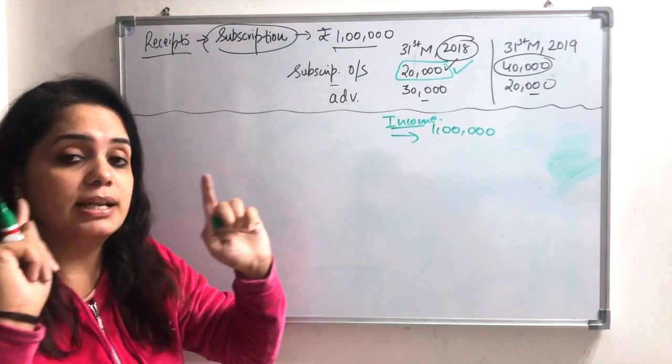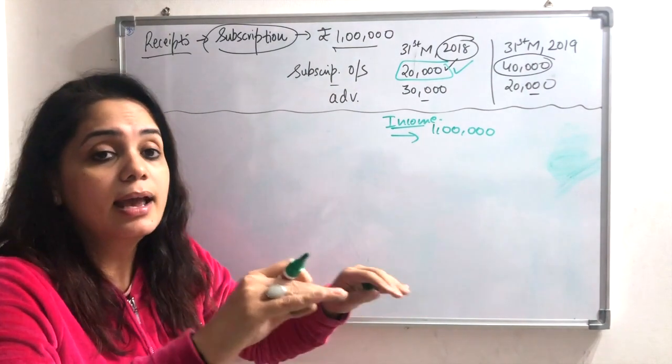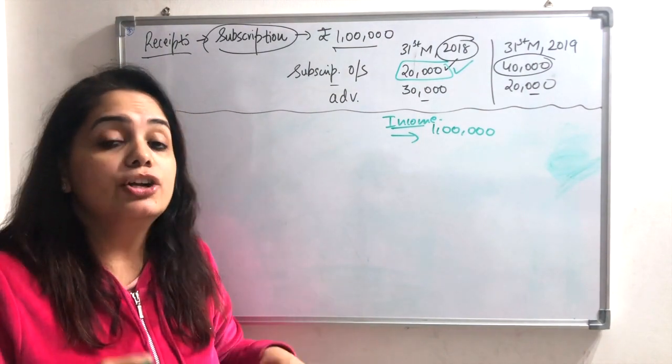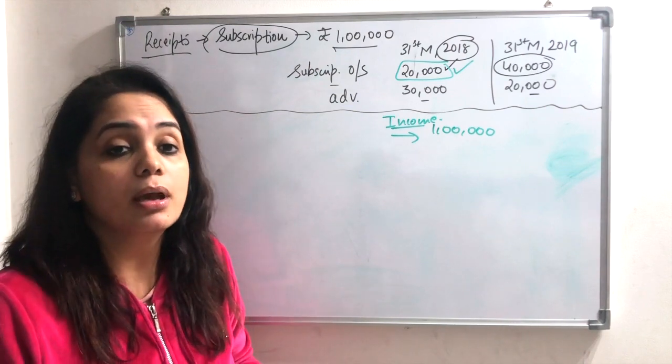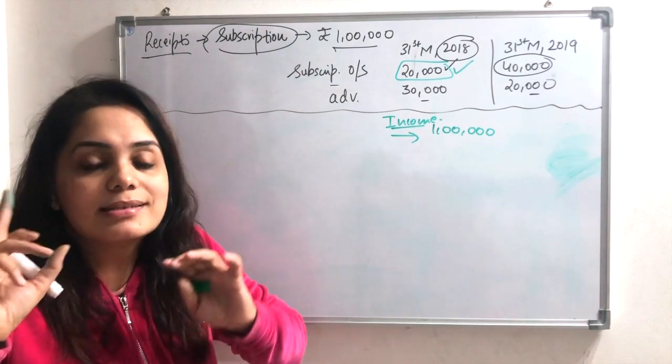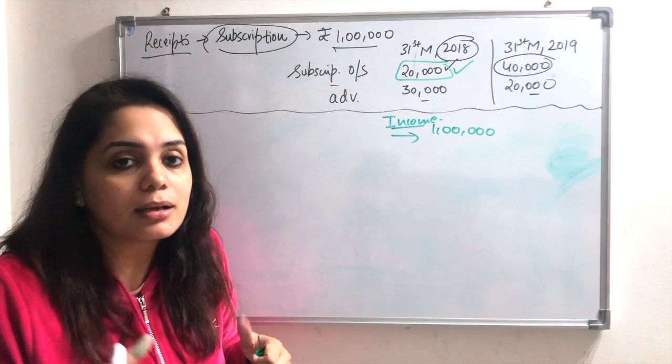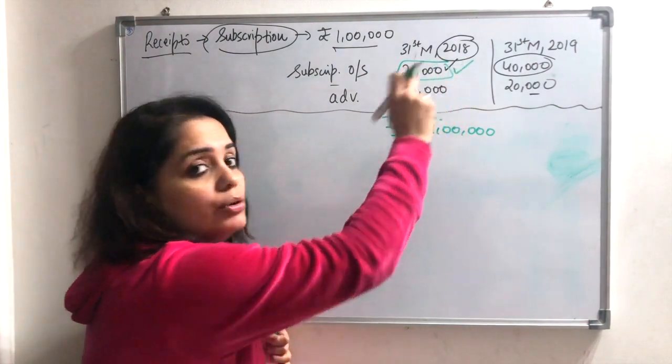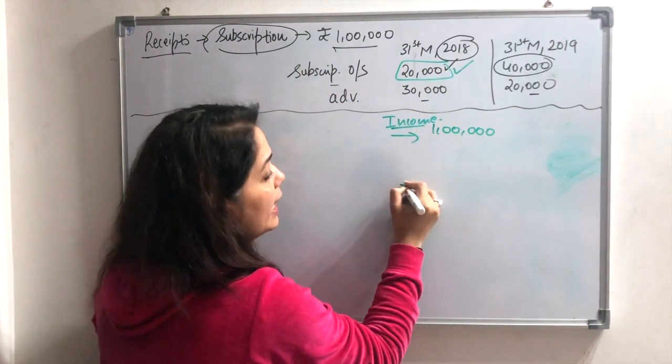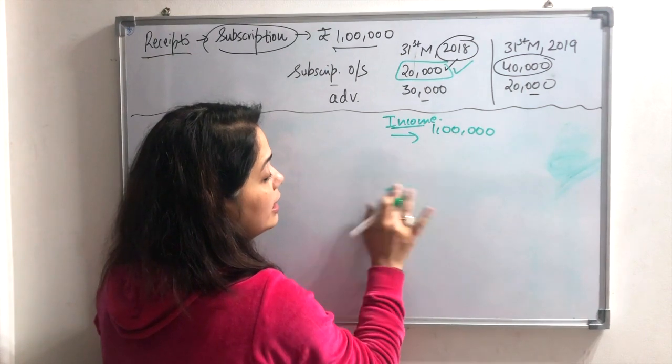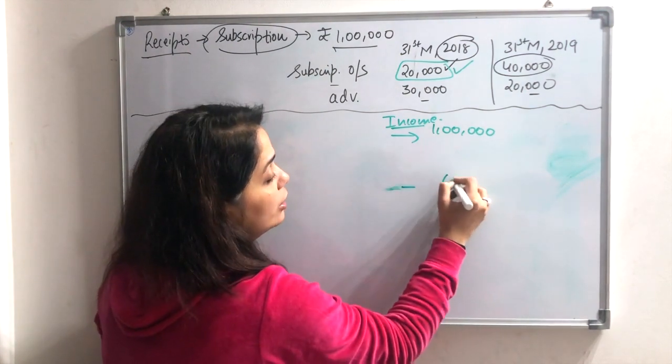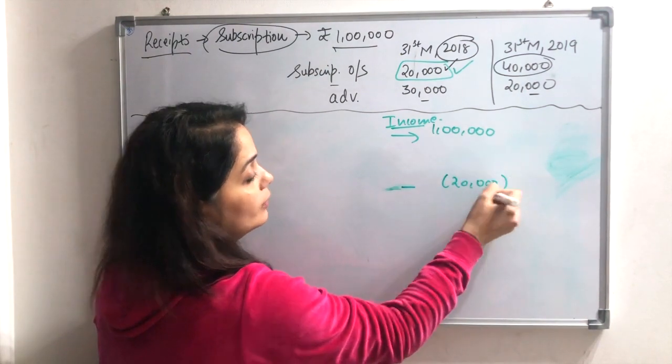What did I say, last year or next year? What does outstanding mean? Due but not received. Due but not received in the last year. So what is the amount? The last year. So I will minus this 20,000.